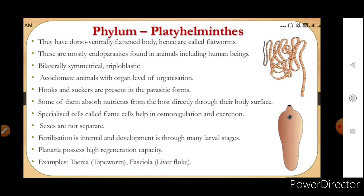Some of them can also absorb nutrients directly through their body surface. Specialized cells called flame cells are present, which help in osmoregulation and excretion. A likely exam question is: in which phylum are flame cells present? The answer is Platyhelminthes, and their function is osmoregulation and excretion.